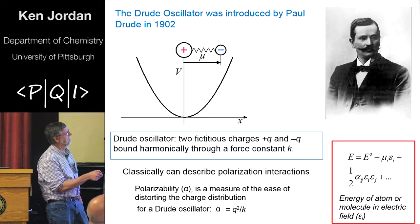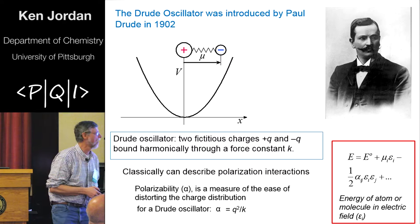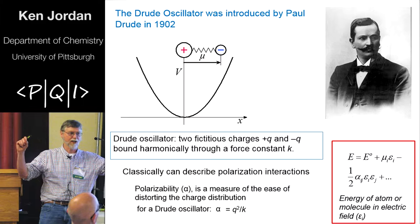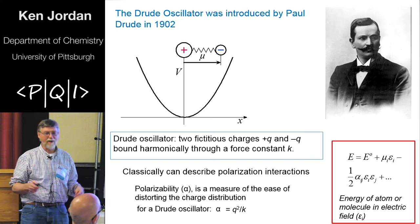So, a little bit of history. There's a picture of Paul Drude, who introduced the oscillator into the literature in 1902. It's an incredibly simple model. It's just two charges, fictitious charges of plus and minus, coupled harmonically.